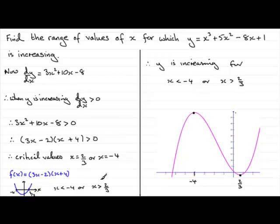And you can see that from the graph here, the graph is decreasing for x between minus 4 and two thirds. So, it's not too different for methods, whether it's increasing or decreasing. But hopefully, that gives you some idea.